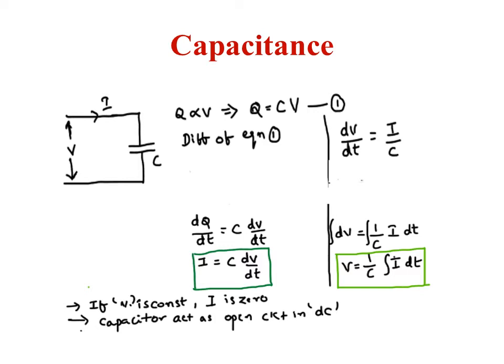Now we will see the voltage and current across a capacitor. To calculate the current and voltage at a capacitor, here we have taken one capacitor excited by some voltage source, causing a current I to flow in the circuit. From the charge relationship, we know that Q is directly proportional to V, giving us Q equals C into V. By differentiating with respect to time, we get dQ/dt equals C·dV/dt. Since dQ/dt equals I, we get I equals C·dV/dt.